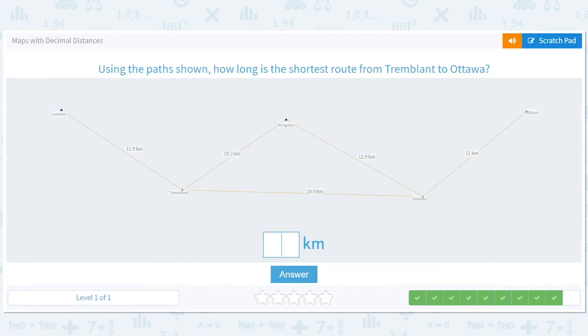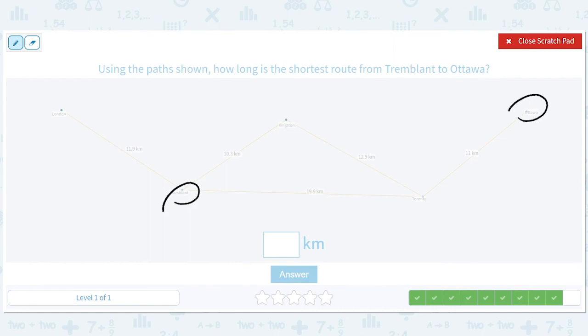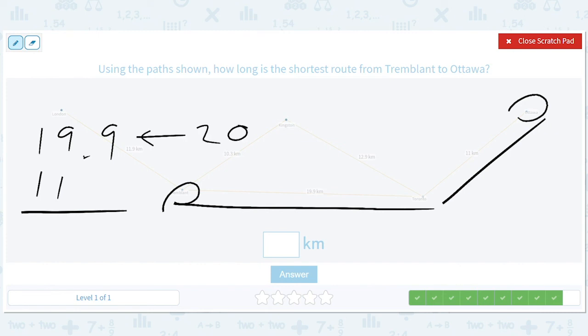What is the shortest route from Tremblant to Ottawa? Here's Tremblant, here's Ottawa. The shortest distance between two points is a line. So to get from Tremblant to Toronto, it's got to be this. So 19.9 plus 11. Let's do this the fun way. That's basically 20 plus 11 is 31. Now you might say, that's not basically 20. You can say basically in math. So how much extra did we add? We added 0.1 extra. So 30.9. You could also add these and get 30 and then do 0.9. Either way, it's 30.9.